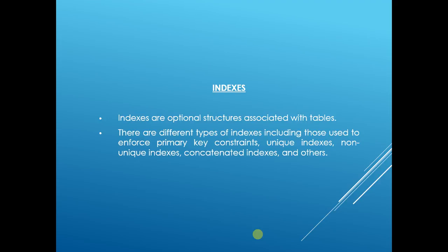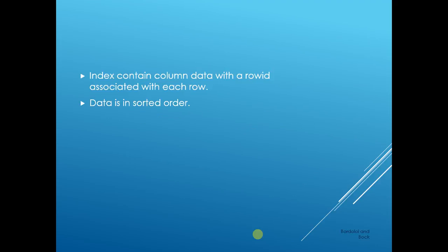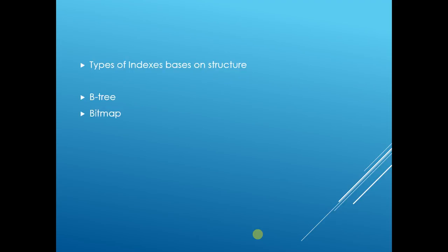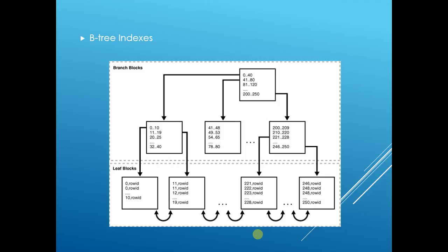Let's discuss the types of indexes. On the basis of structure, there are B-tree and bitmap indexes. A B-tree index looks like a balanced tree. The leaf nodes, the leaf blocks, contain the data.